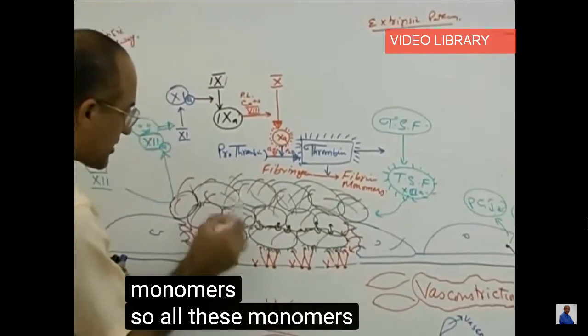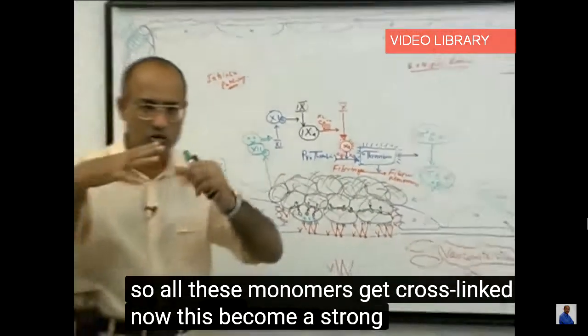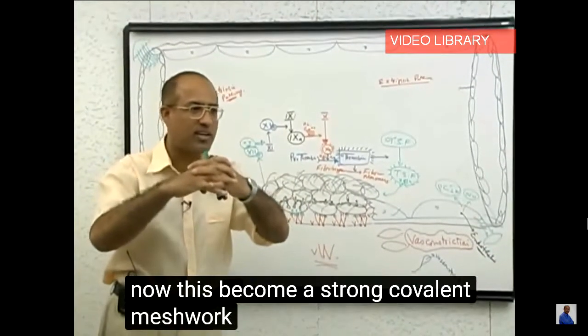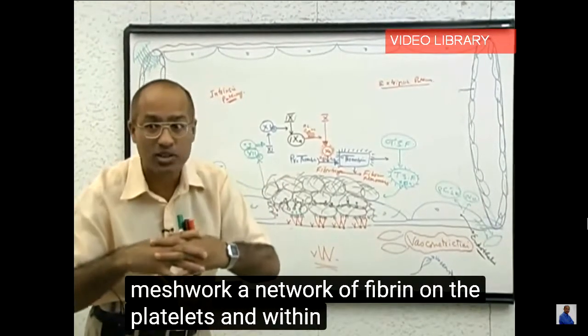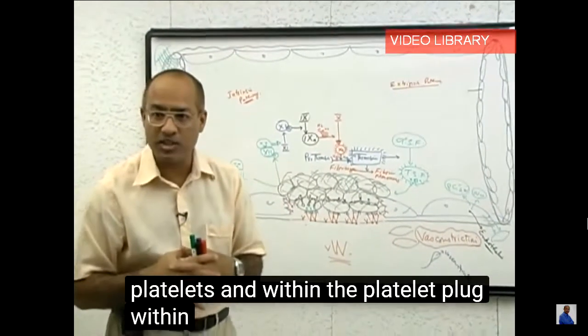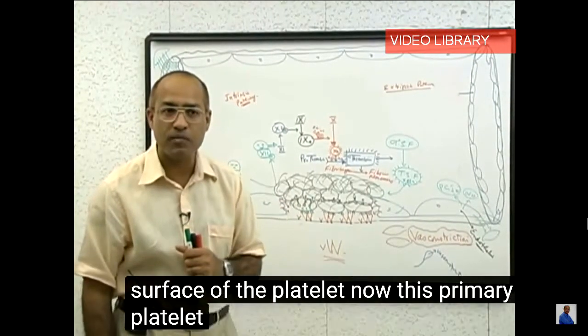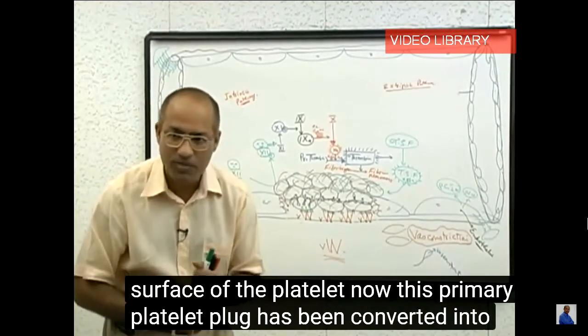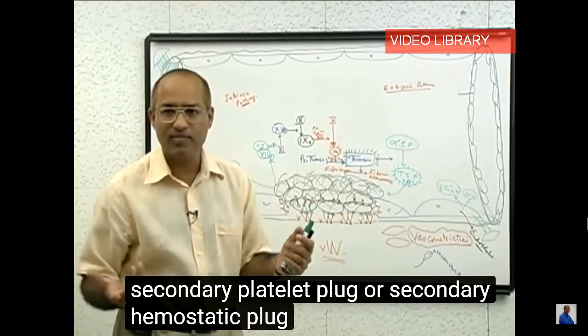So all these monomers get cross-linked. Now this becomes a strong covalent meshwork and network of fibrin on the platelets and within the platelet plug. Within the platelet plug and on the surface of the platelet. Now this primary platelet plug has been converted into secondary platelet plug or secondary hemostatic plug.